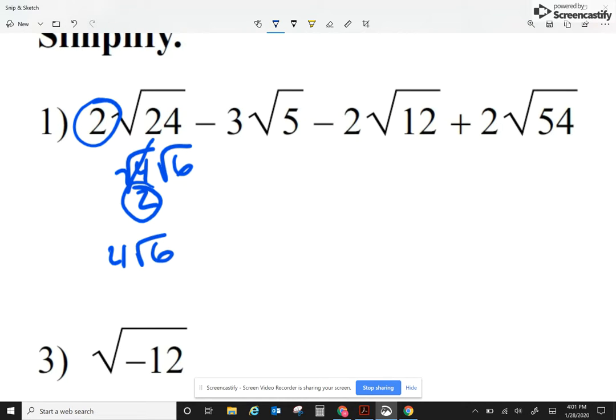Radical 6 I cannot simplify. I can split that as 2 times 3, but neither of them is perfect. My second term, radical 5, I cannot simplify, so I'm just going to call this negative 3 radical 5.